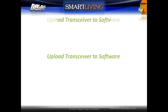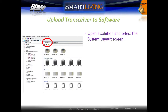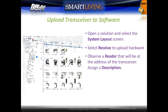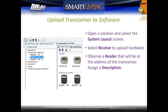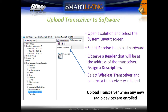To upload the transceiver details into the software, first open a solution and select the system layout screen. Next, select receive to upload the connected hardware. Observe that a reader is uploaded at the address of the transceiver. Assign a description to easily identify the transceiver. Then select wireless transceiver from the system tree and confirm that a transceiver was found. Anytime new devices are enrolled to the transceiver, this tab should be uploaded to the software.